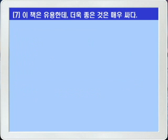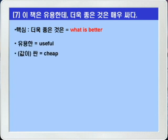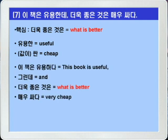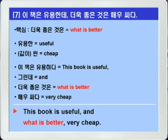마지막 7번입니다. 이 책은 유용한데 더욱 좋은 것은 매우 싸다. 이 영작의 핵심은 더욱 좋은 것은을 what is plus 비교급 구문인 what is better로 쓰는 것입니다. 유용하다는 useful, 싸다는 cheap를 씁니다. This book is useful, and what is better, very cheap. 이것으로 137쪽의 모든 내용을 마쳤습니다.